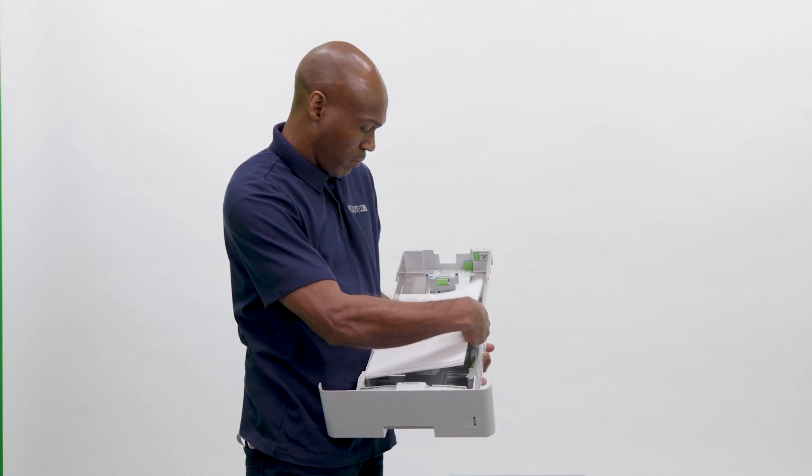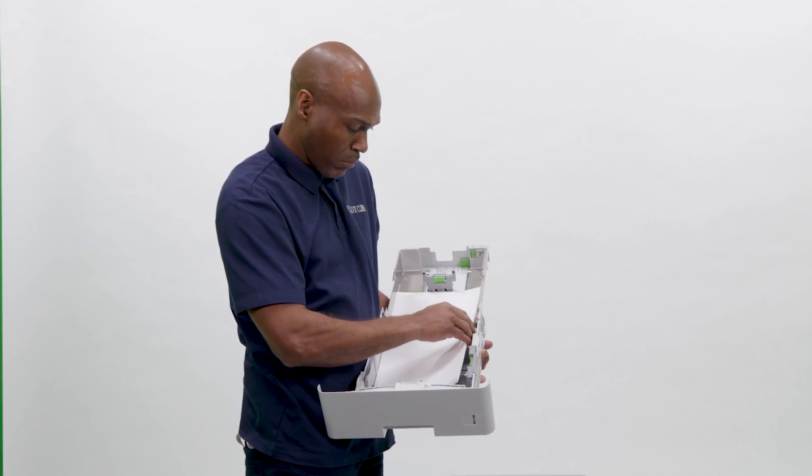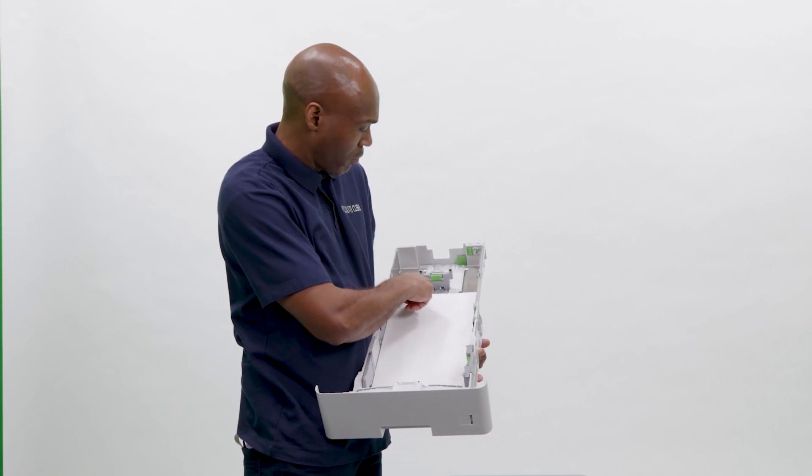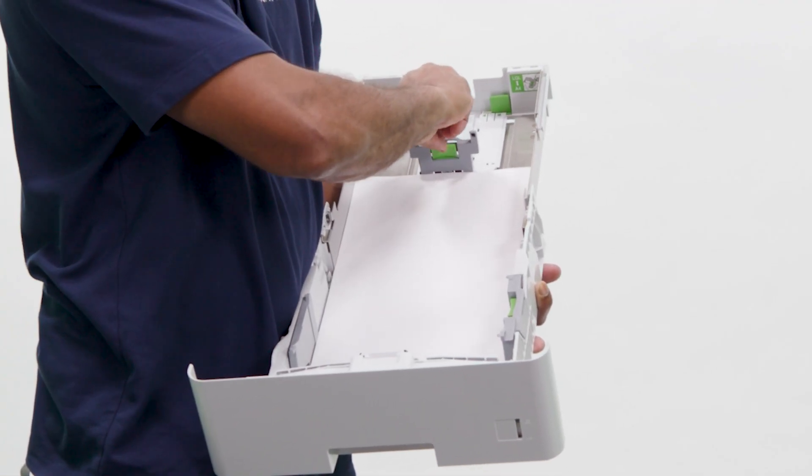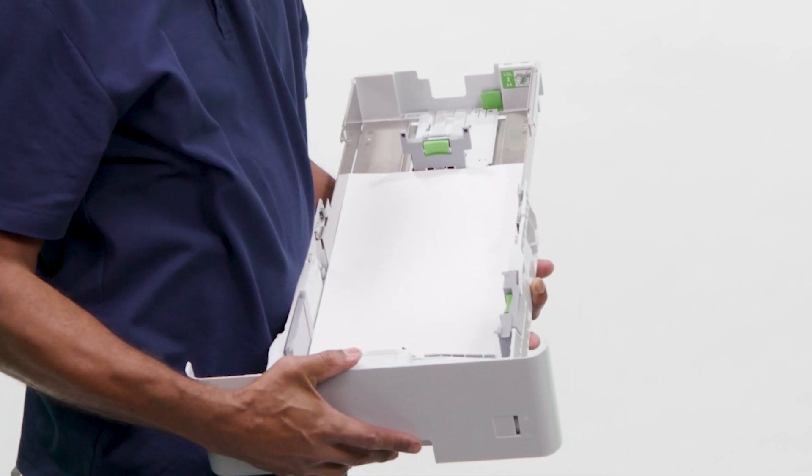Load the blank ballot paper into the ballot tray. The blank ballot paper is found with the printed ballots inside the ballot box. Adjust the green paper guide to accommodate 17 inch ballot paper.